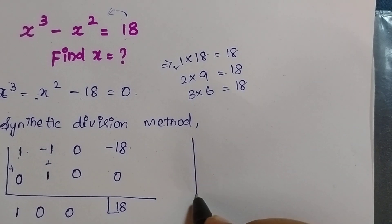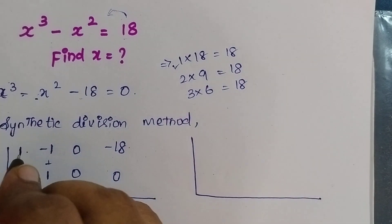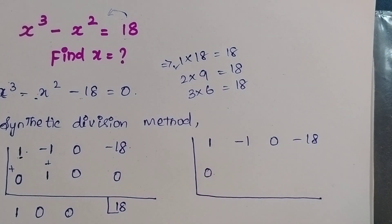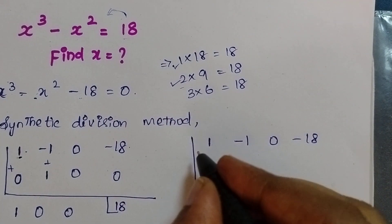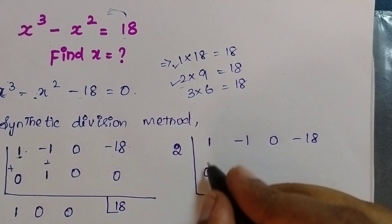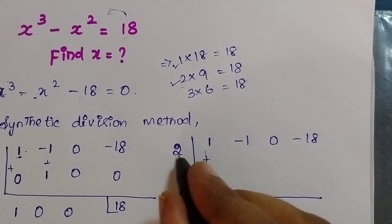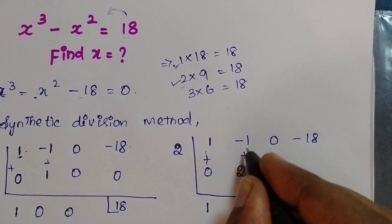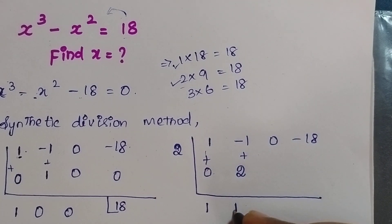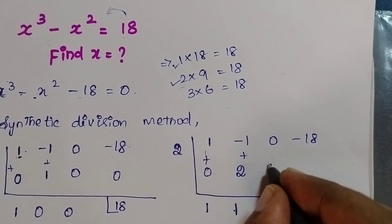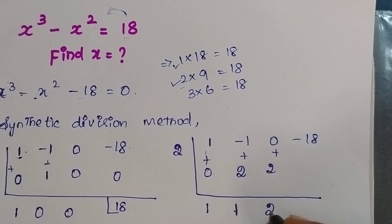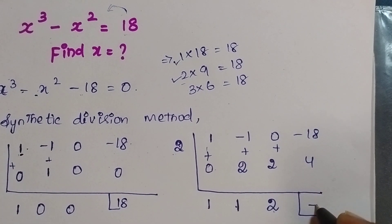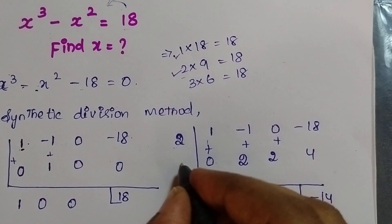So let's write the same thing and check with 2. The numbers we have in the question are 1, minus 1, 0, minus 18. Put defaultly 0 here, and I am going to take the number 2. If I add these two, I get 1. 1 into 2 is 2. If I add these two, minus 1 plus 2 is plus 1. 2 into 1 is 2. If I add these two, I get 2. 2 into 2 is 4. Now I get minus 4, which is not 0. So 2 is not a factor of this equation.